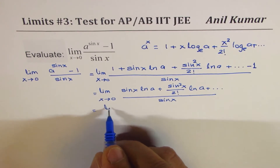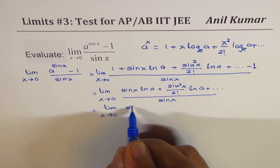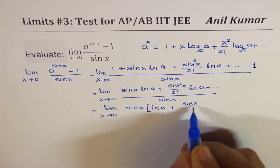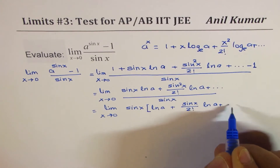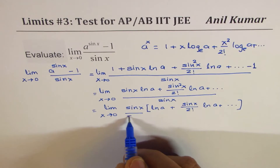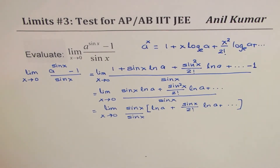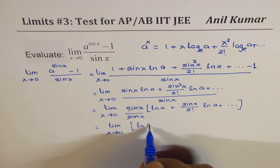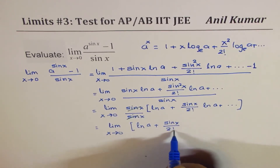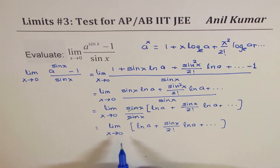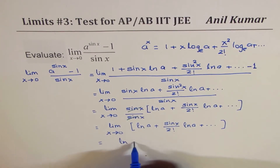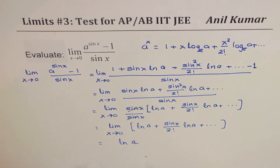We can take sin x as a common factor. After canceling sin x from numerator and denominator, we are left with the limit as x approaches 0 of ln a plus sin x over 2 factorial times ln a, plus further terms. Substituting 0, all terms with sin x vanish, and we are left with ln a as our solution. So the limit of the function is ln a.